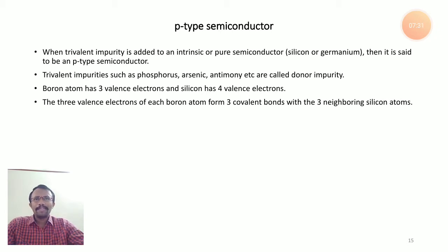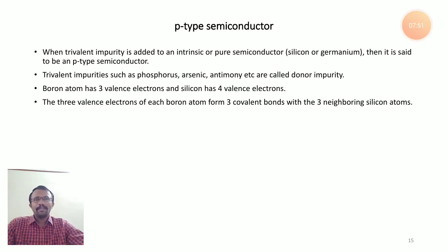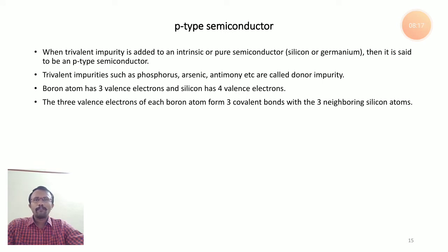The boron atom has three valence electrons, and the intrinsic semiconductor — silicon or germanium — has four valence electrons. The three valence electrons of boron participate in covalent bonding with three electrons of the silicon atom. There is one vacant space known as a hole, which is ready to accept an electron. That's why the trivalent impurity is called acceptor impurity, while the pentavalent impurity is called donor impurity.